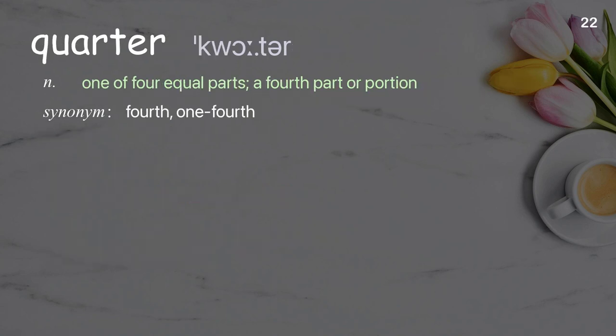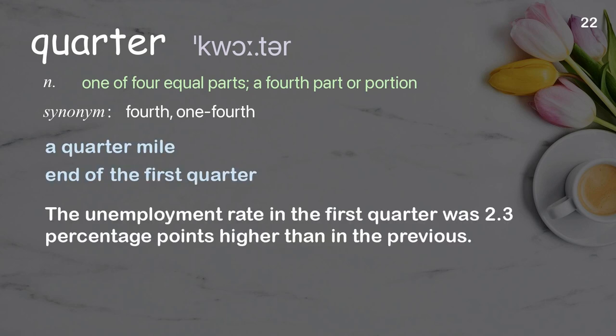Quarter: one of four equal parts; a fourth part or portion. Examples: a quarter mile, end of the first quarter. The unemployment rate in the first quarter was 2.3 percentage points higher than in the previous.